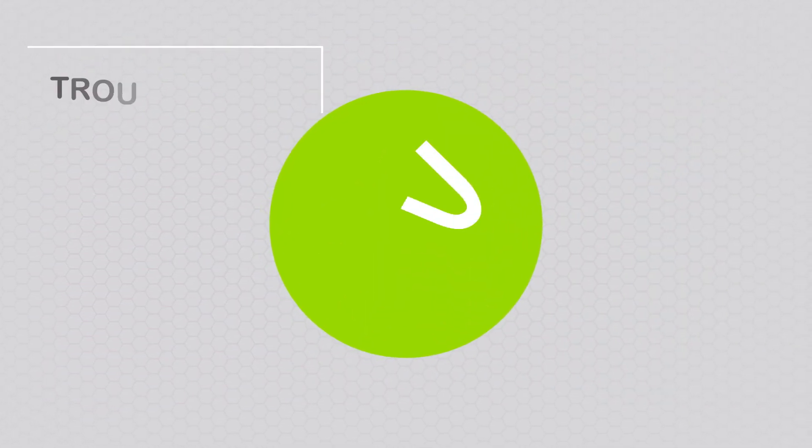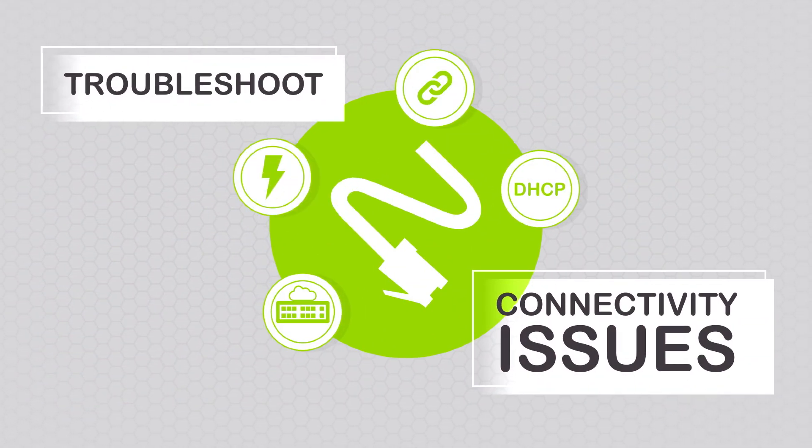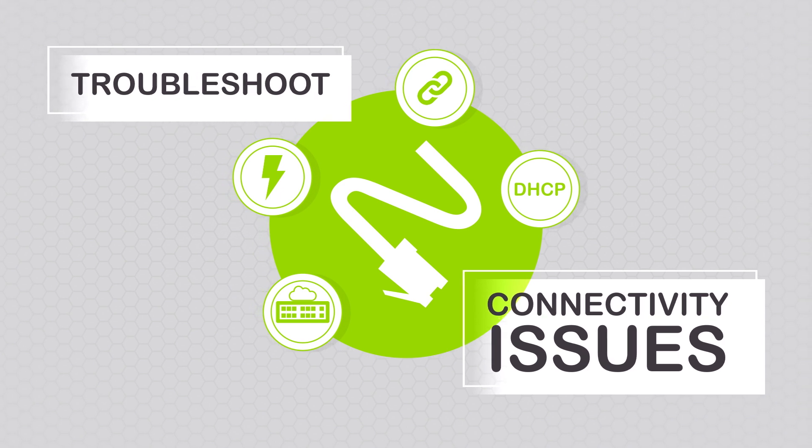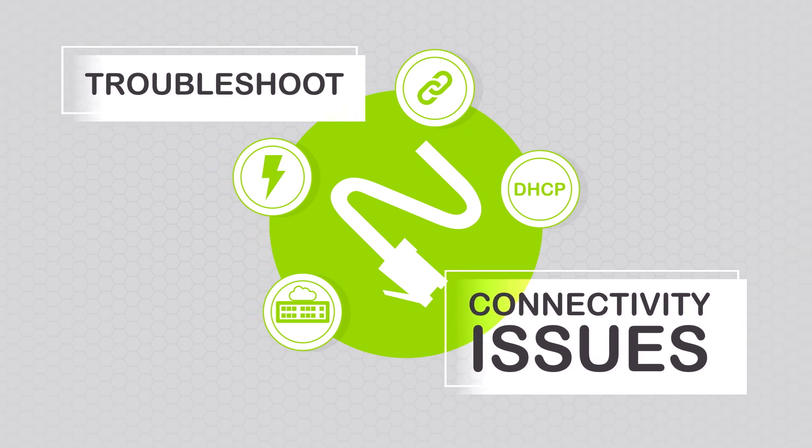Network connectivity issues can be a major source of frustration for end users and put IT professionals in the hot seat. That's why it's important to troubleshoot connectivity issues and identify problem domains on copper Ethernet links quickly.